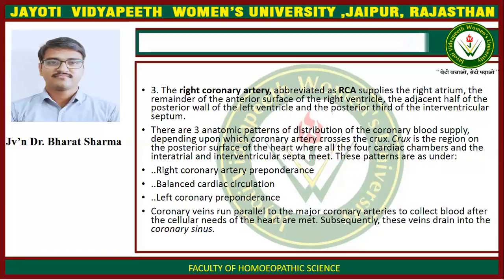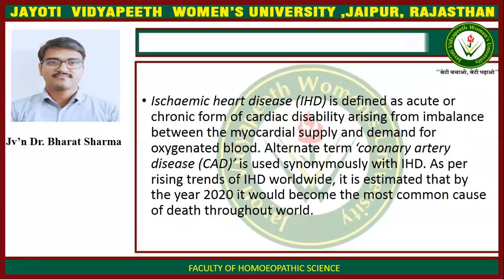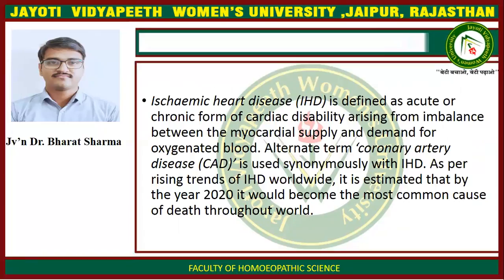Coronary veins run parallel to the major coronary arteries to collect blood after the cellular needs of the heart are met. Subsequently, these veins drain into the coronary sinus. Ischemic heart disease is defined as an acute or chronic form of cardiac disability arising from imbalance between the myocardial supply and demand for oxygenated blood. The alternate term coronary artery disease is used synonymously with ischemic heart disease. As per rising trends of IHD worldwide, it is estimated that by the year 2020, it would become the most common cause of death throughout the world.